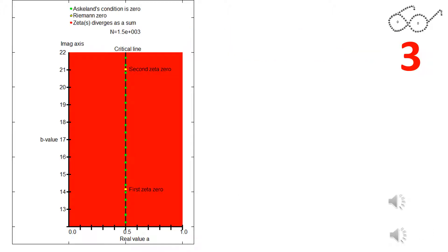Let's just start with the visualization. The two yellow dots are the first two 0s of the zeta function. The green dots are 0s of Askeland's condition. n is the number of vectors of the zeta function.